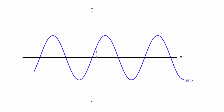I want to pick two points on the sine wave. I'm going to pick x1, where the function equals sine of x1, and x2, where the function equals sine of x2. The difference between x1 and x2 is delta x, or the change in x. It turns out x2 equals x1 plus the change in x. So I can rewrite sine of x2 as sine of x1 plus delta x.